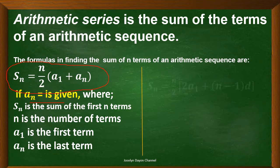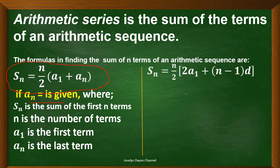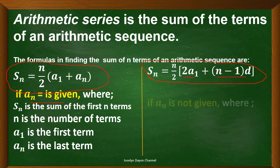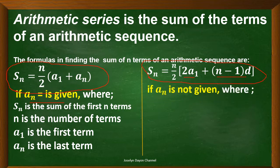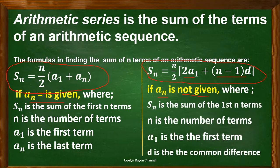The second formula is S sub n equals n over 2 times the quantity of 2 times A sub 1 plus the quantity of n minus 1 times d. We will be using this formula if A sub n, or the last term, is not given. Here, S sub n is the sum of the first n terms, n is the number of terms, A sub 1 is the first term, and d is the common difference.